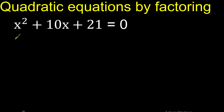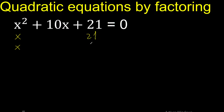x multiplied by x is x squared. We need 2 numbers that multiply to 21: 21 multiplied by 1 is 21, or 7 multiplied by 3 is 21.